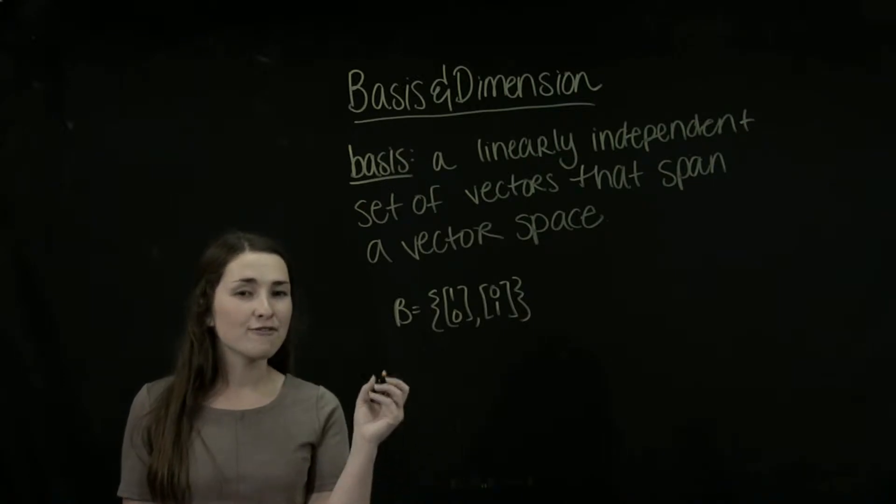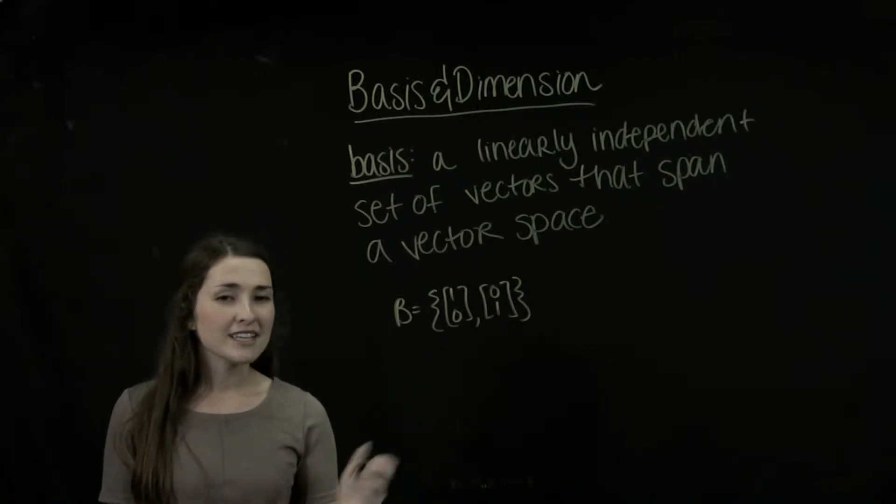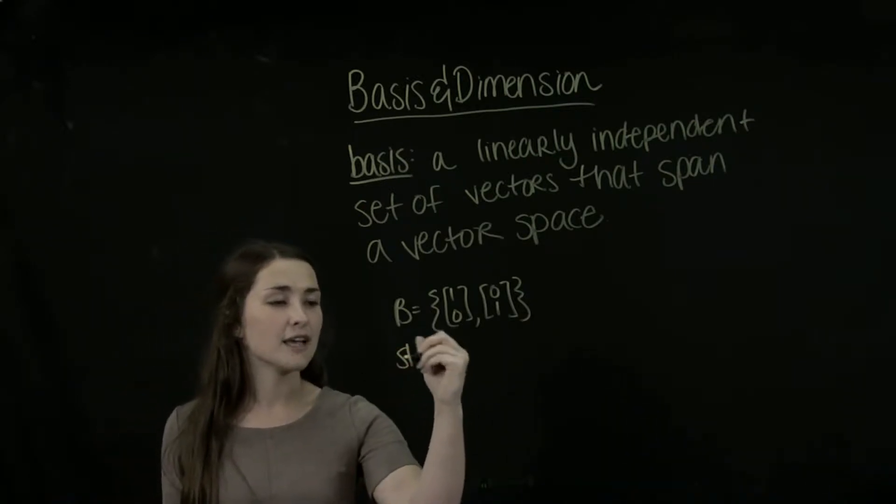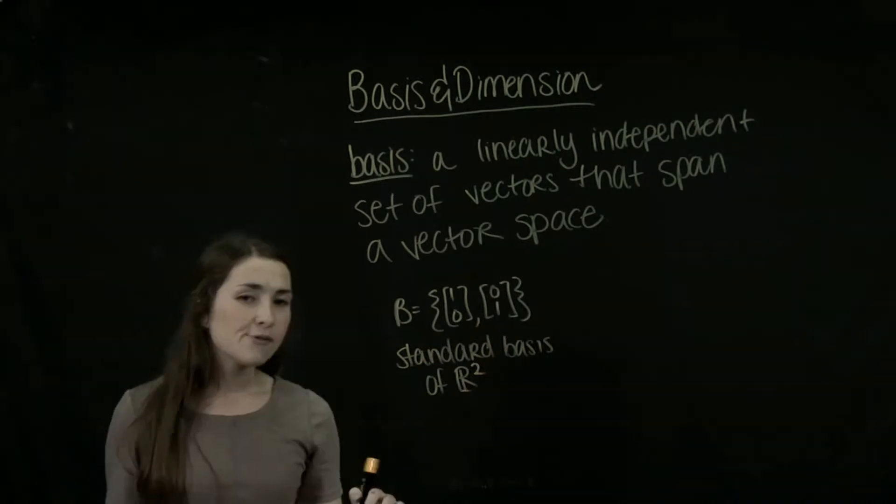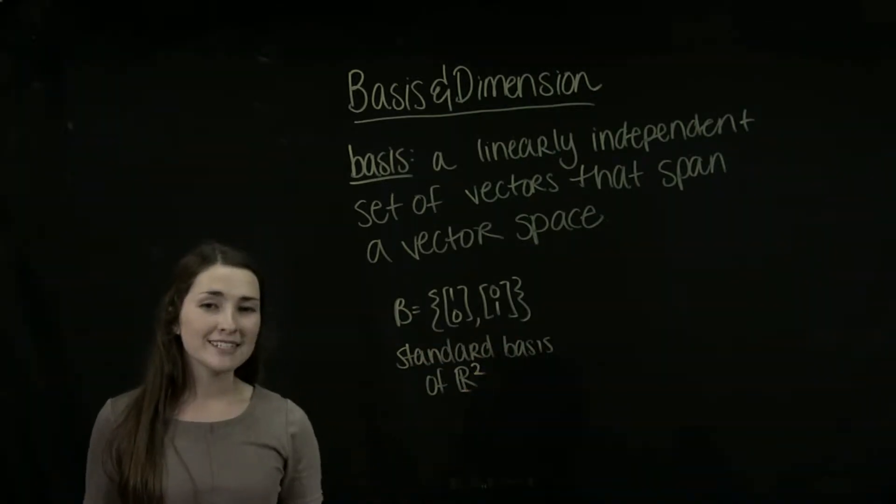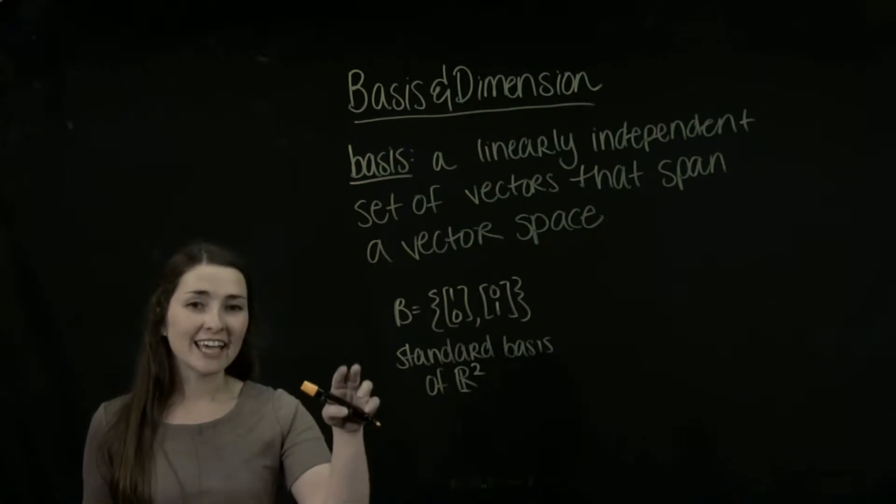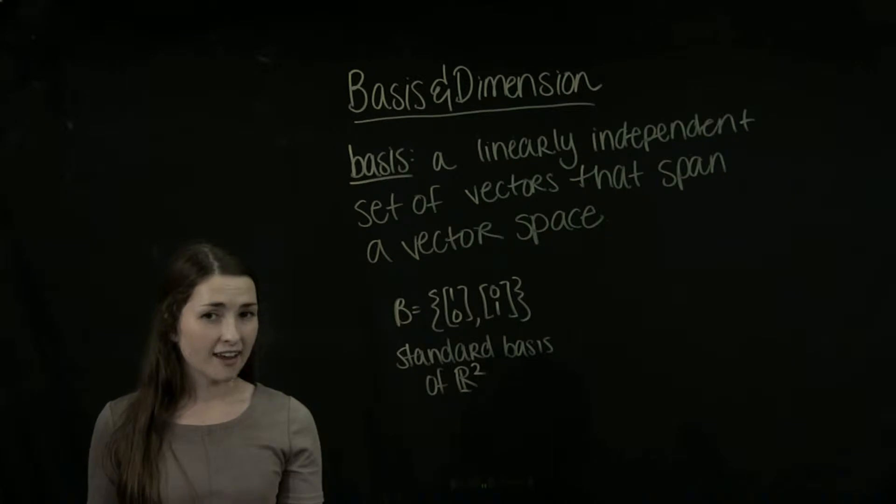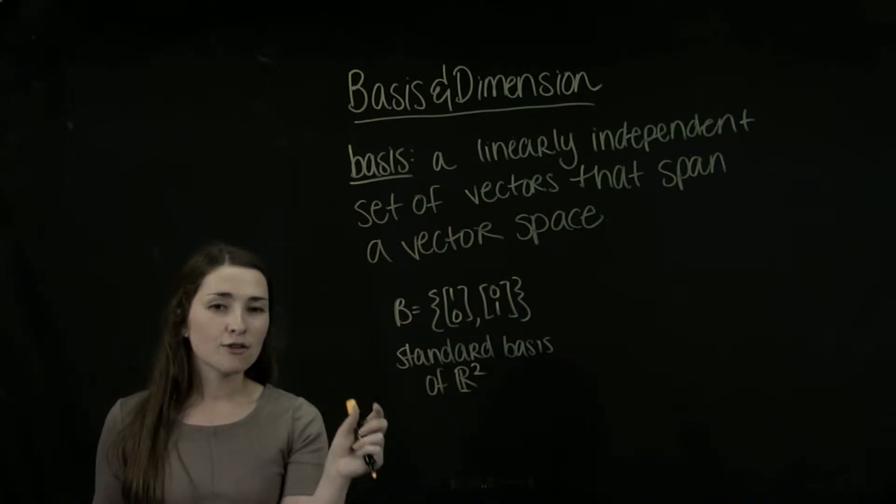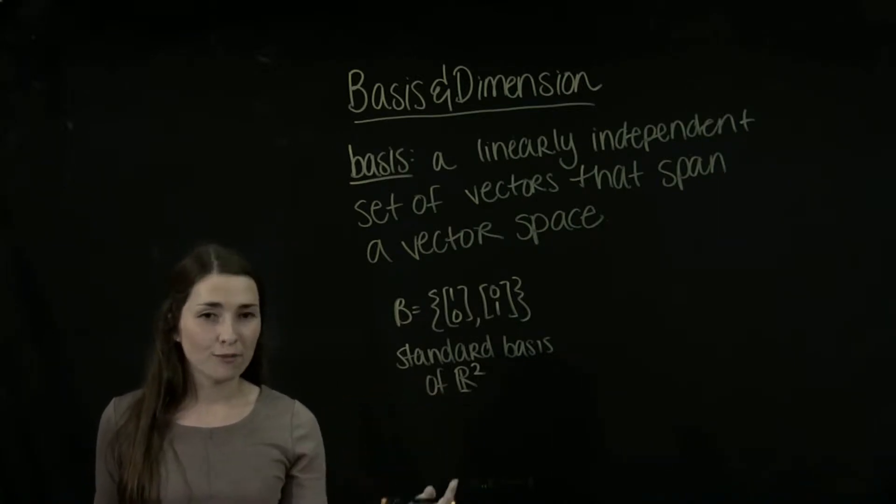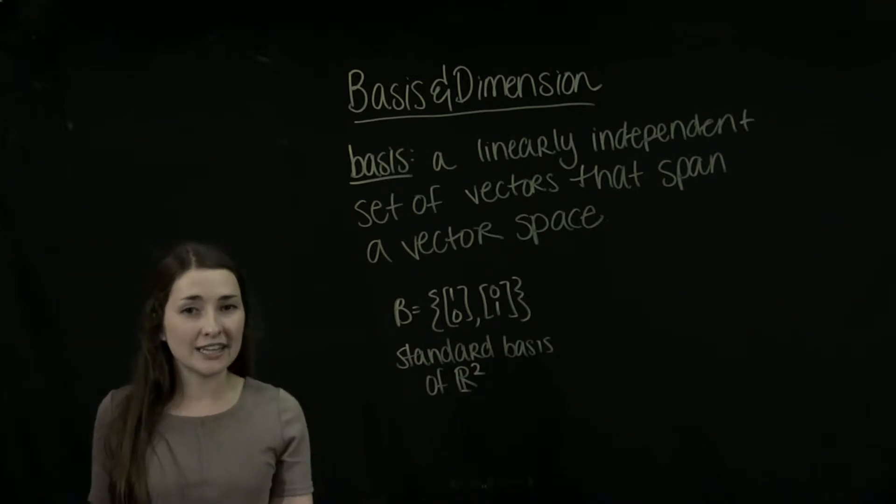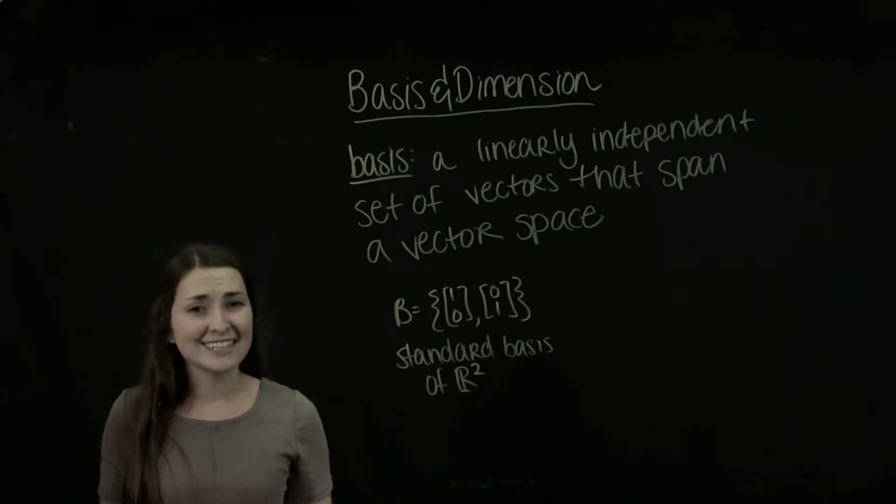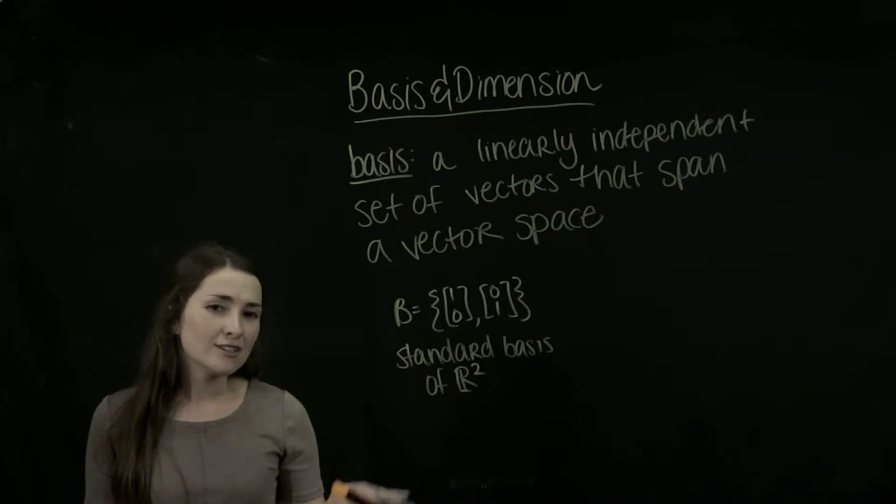So we actually have a very special name for this, and it is the standard basis of R2. We can actually construct a similar basis for Rn just by taking the columns of our identity matrix of size n and using those columns as vectors to form our basis because that means they're going to be linearly independent and easily span the entire vector space.